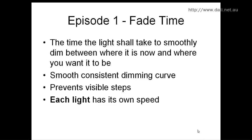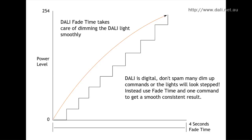The other thing about fade time is DALI is a digital system — the D in DALI stands for digital. With digital you have different steps, and each step is the fading or dimming position of the light. You don't want the system to be moving up one step at a time, especially with LEDs now. They're very sensitive and there could be a chance where the person might see a slight flicker, which looks a bit cheap.